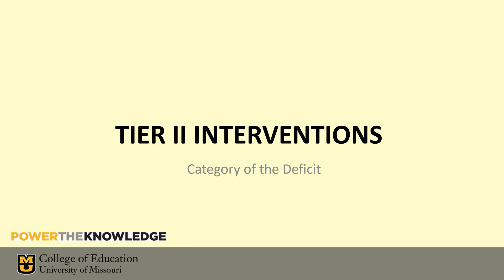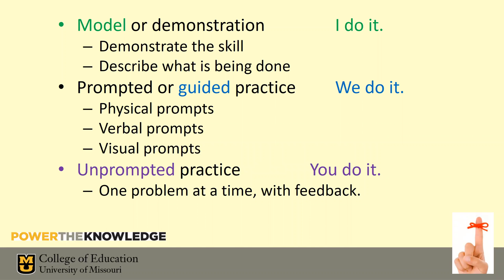Next we'll talk about tier two interventions. The primary problem analysis question is the category of the problem and category of the deficit. Good interventions always have three components: I do, we do, you do. I model for the kid, then the kid and I work on it together to make sure they can do it, and then they do it on their own. It's really important that tier two interventions include some modeling.